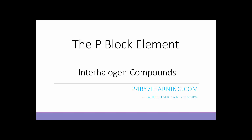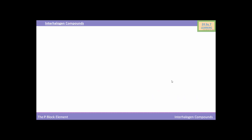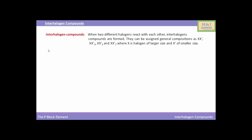In this lesson we will discuss the P block elements, specifically interhalogen compounds. When two different halogens react with each other, interhalogen compounds are formed. They can be assigned general compositions as XX', XX'₃, XX'₅, and XX'₇, where X is the halogen of larger size and X' is the halogen of smaller size.